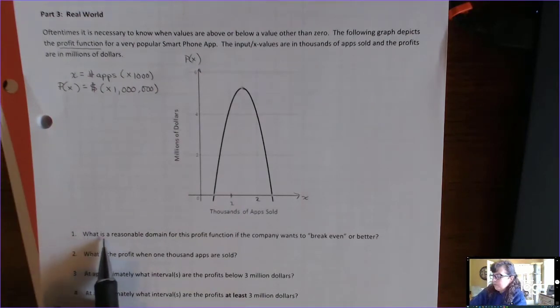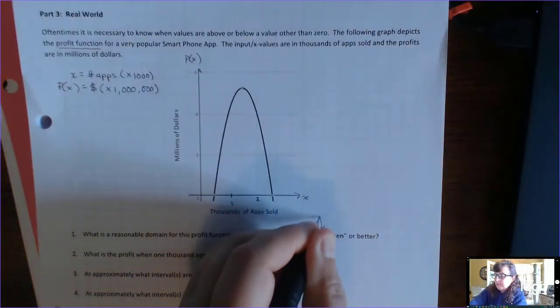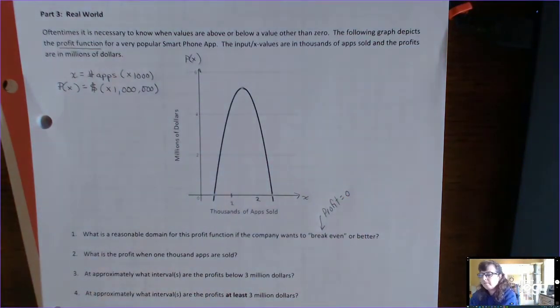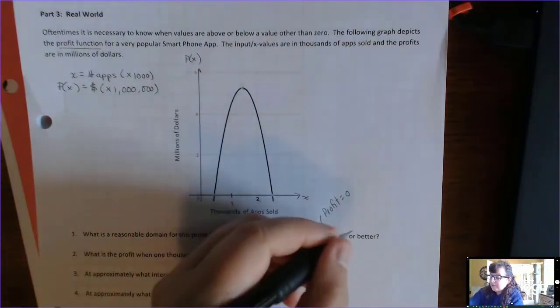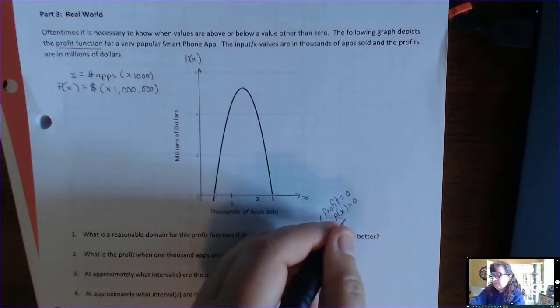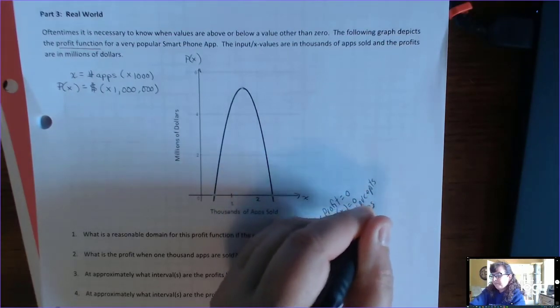And the first question is, what is a reasonable domain for this profit function if the company wants to break even or better? So, break even means that when your profit is equal to zero, which is called break even because you don't want to lose money. So, when you start, your profit is at least equal to zero, it's called breaking even. Alright, so a reasonable domain for when this profit function is either breaking even or doing better. So, it's breaking even when the profit is equal to zero and so that, if you might recall, when the y equals zero, that means we're looking for the x-intercepts or the zeros of the function.